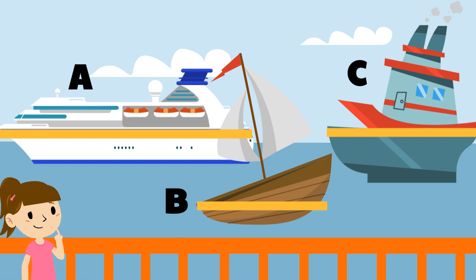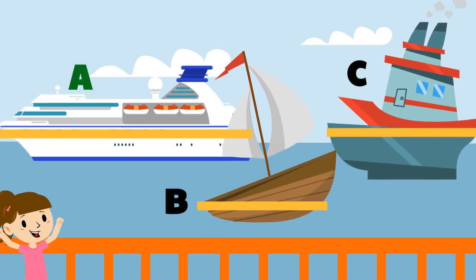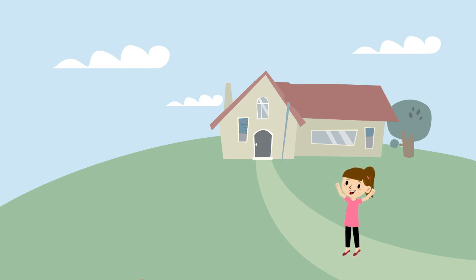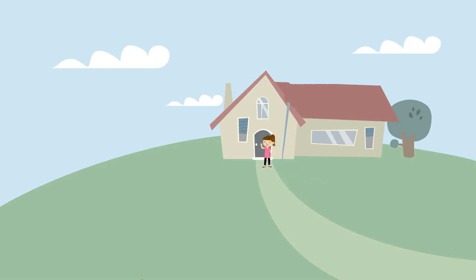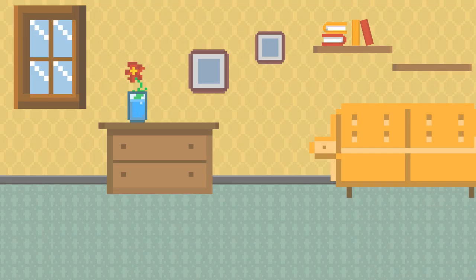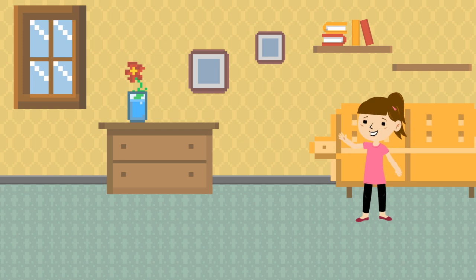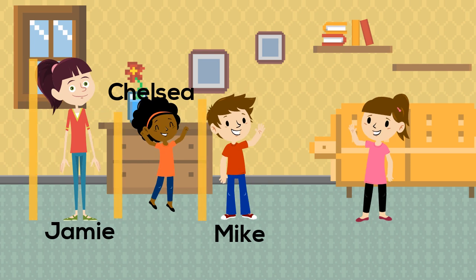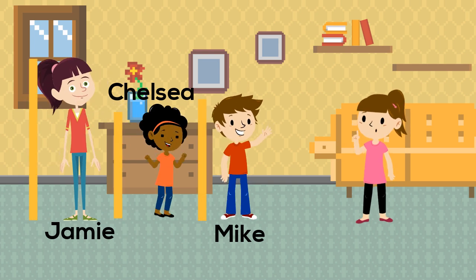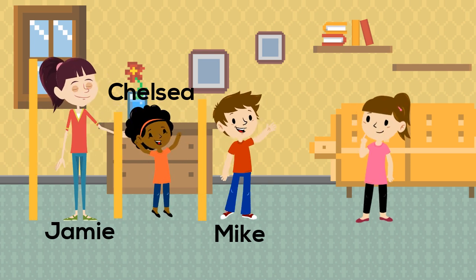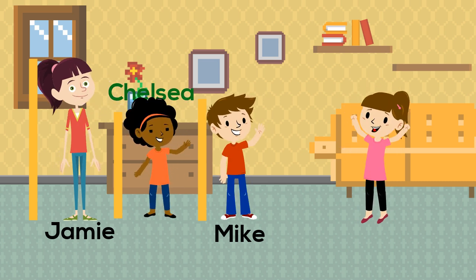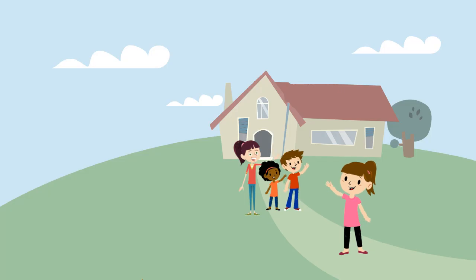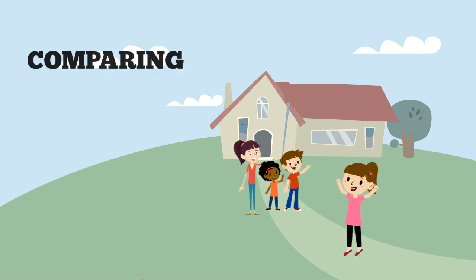The answer is ship A. Her last stop is her neighbor's house. She heard that there are kids in the house and she wants to meet them so she can have playmates. When she got there, she met Jamie, Chelsea, and Mike. Which one of them is the shortest? You got it — Chelsea is the shortest among the kids! It's time for Emma to go home. Let's thank her for helping us learn more about comparing lengths.